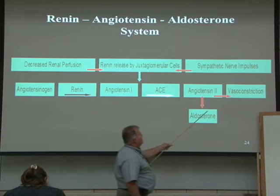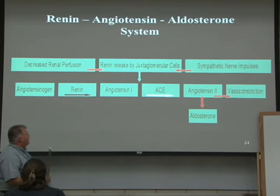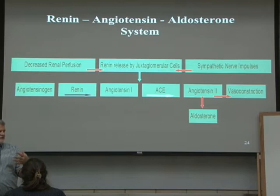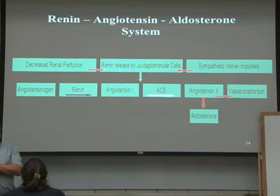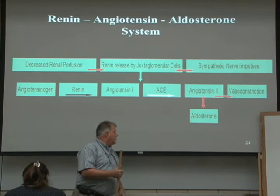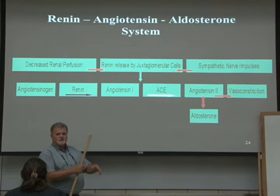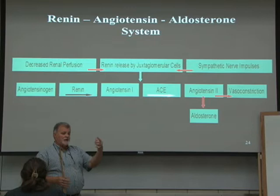Angiotensin 2 is a vasoconstrictor. When you vasoconstrict, it can get confusing because you can vasoconstrict in one area. For example, if you had a hemorrhage, you want to keep core circulation going, so you start vasoconstricting in your arms and legs. That's why people's hands get cold and clammy and you can't feel radial pulses. If we have decreased blood flow to the kidney, we could constrict blood vessels in the extremities, increase core circulation, which would increase circulation to the kidney.